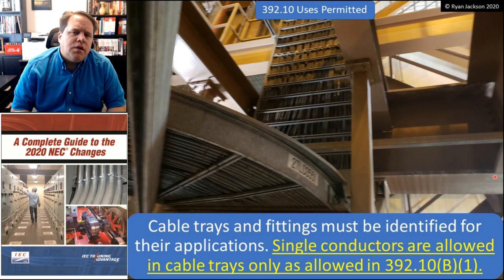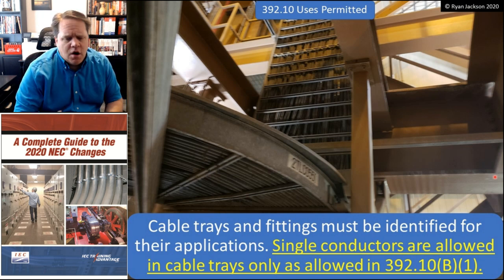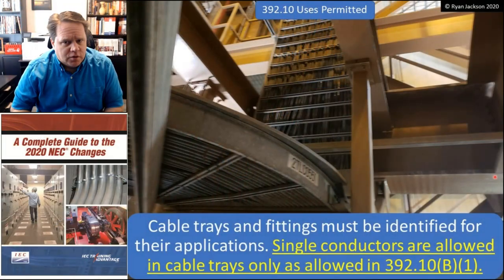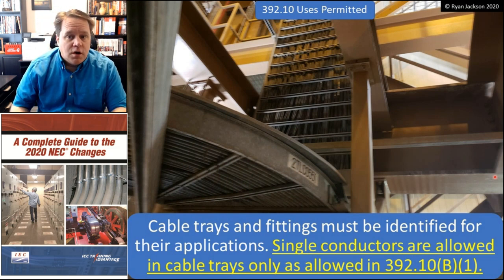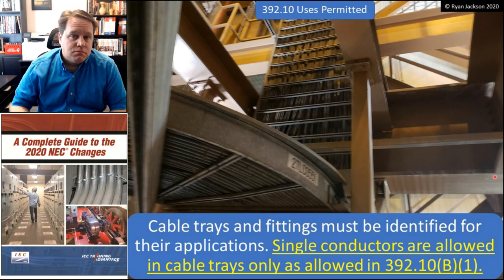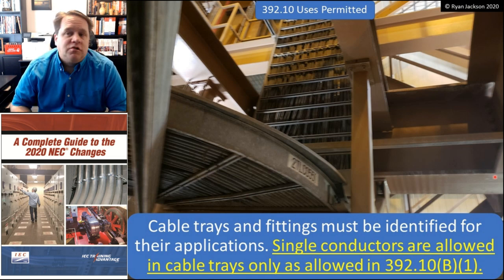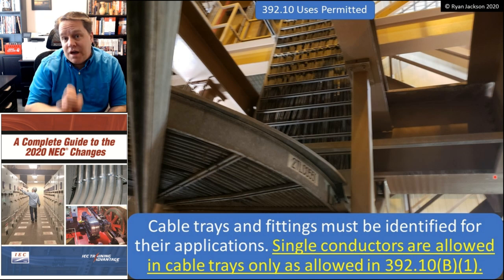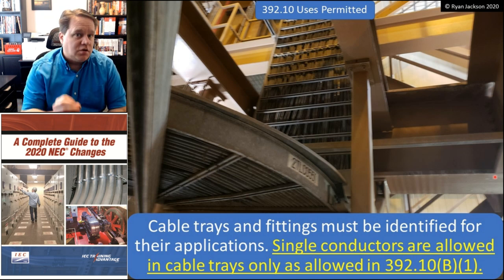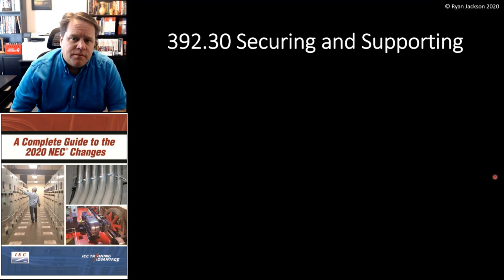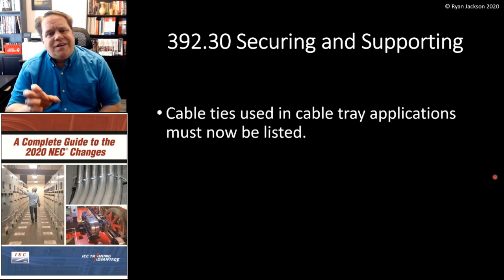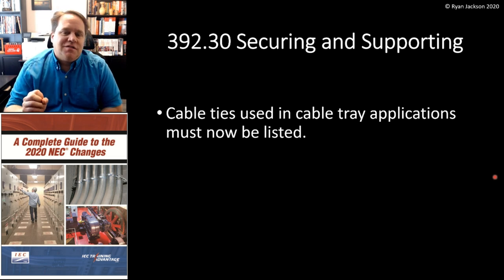Single conductors are allowed in cable trays only as permitted in 392.10(B)(1). This is saying that if you're in a supervised industrial location and you have conductors that are 1/0 AWG and larger — at least for circuit conductors — and they're rated for cable tray usage, then you can put individual conductors in your cable tray. This is only for supervised industrial installations; you can't do that in a house or a commercial building.